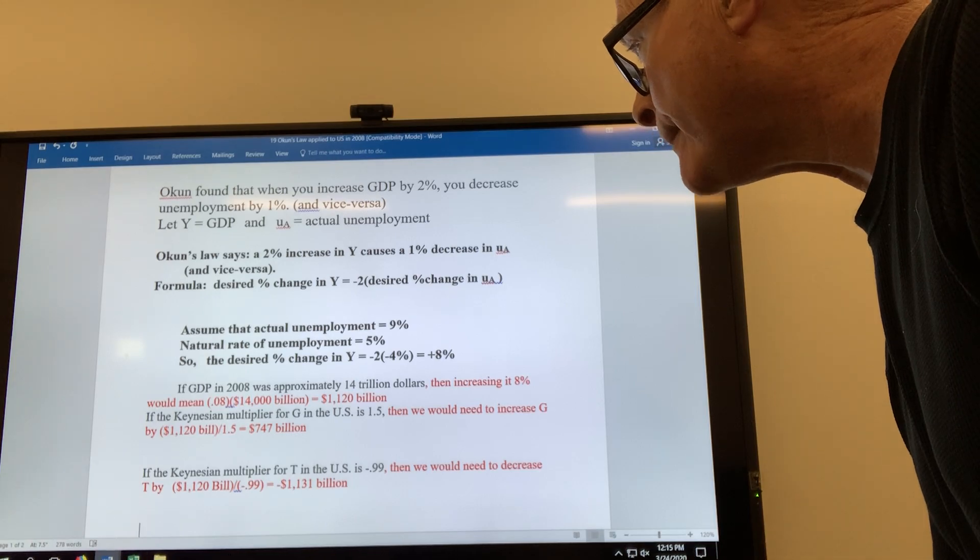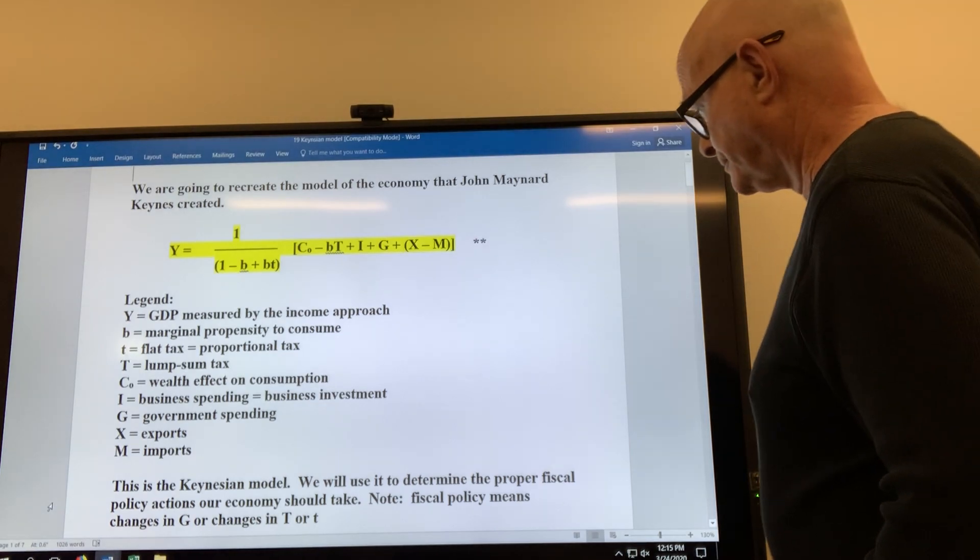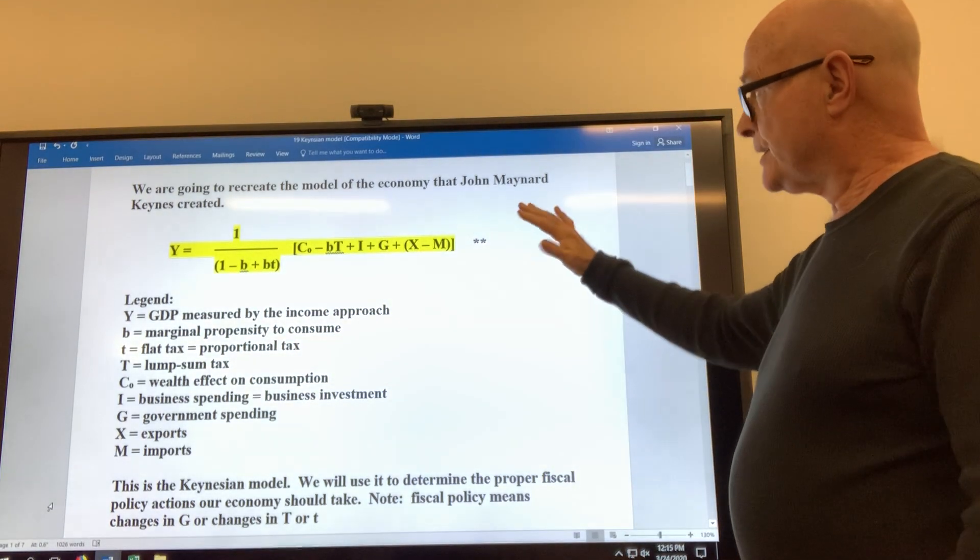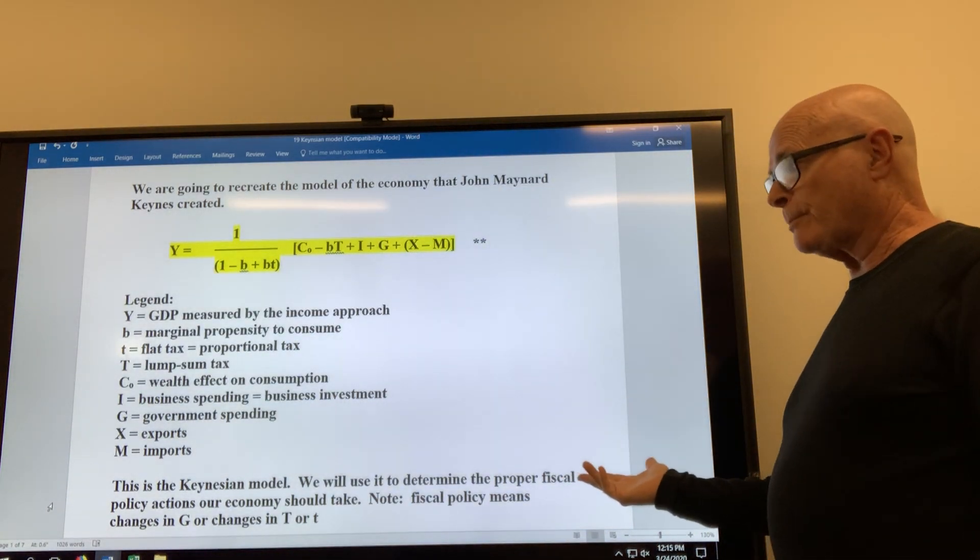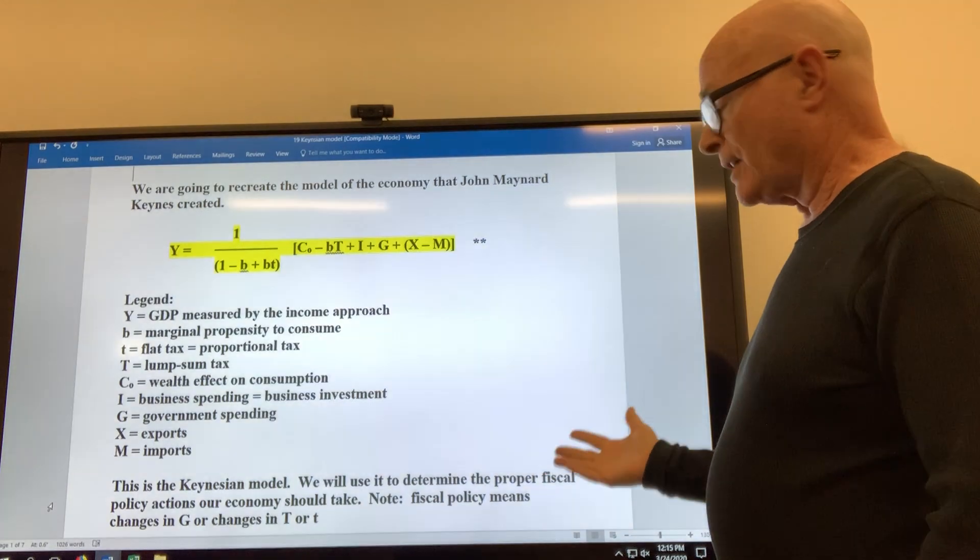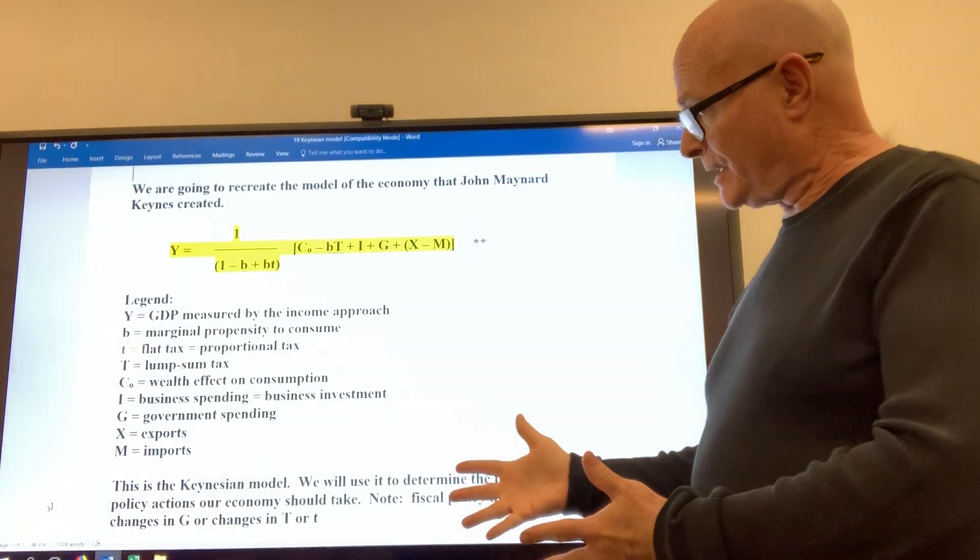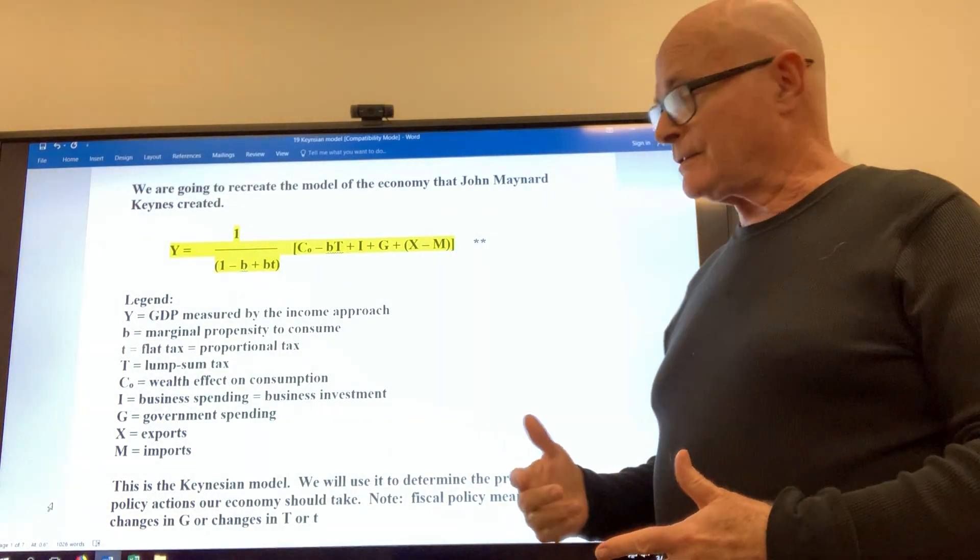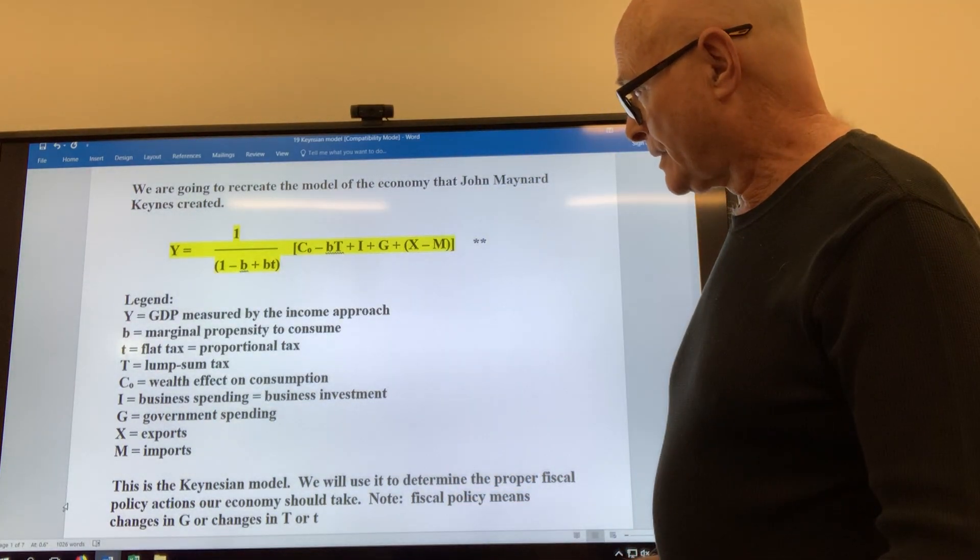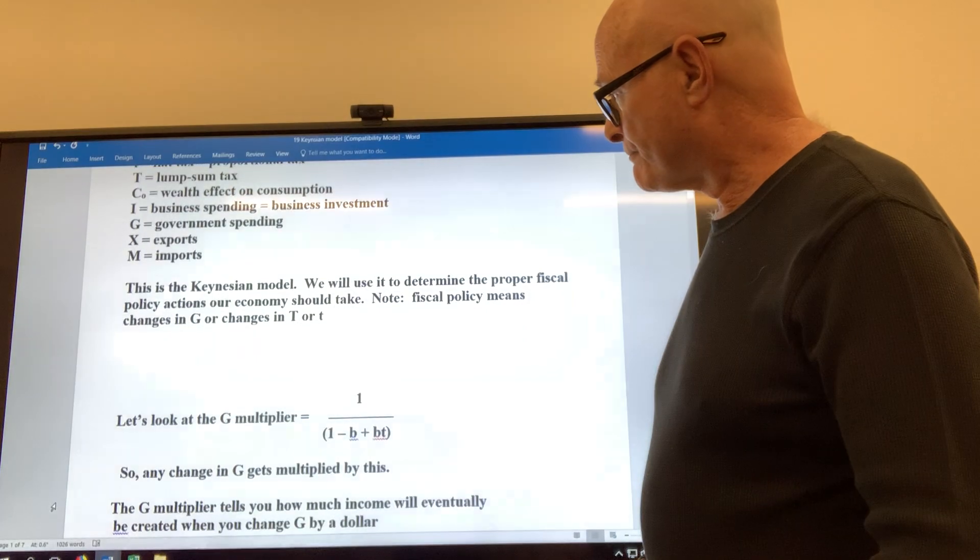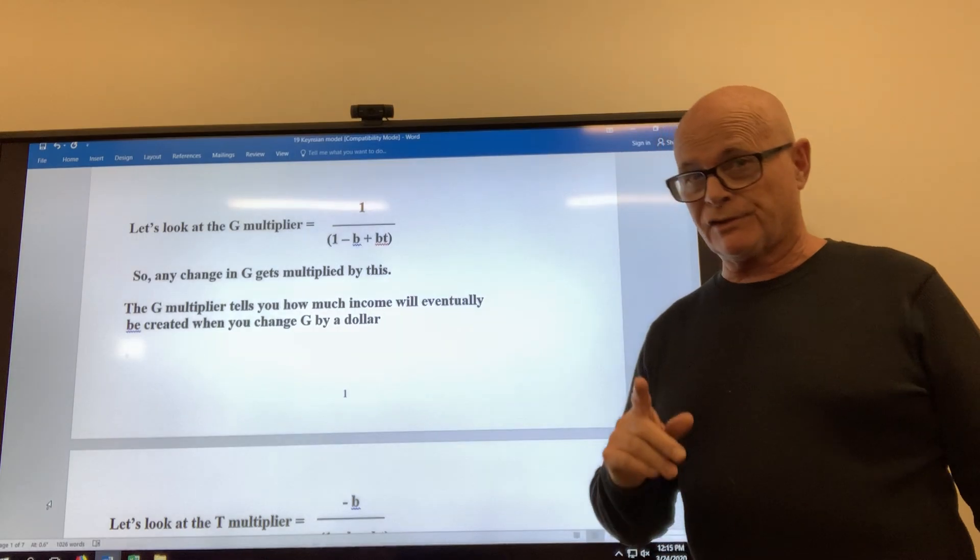Before we do that, let's finish our Keynesian model. So we're going to use the double star equation, the Keynesian model, to determine the proper fiscal policy actions that our economy should take. So that means changes in government spending G or changes in taxes, our big T or our little t.